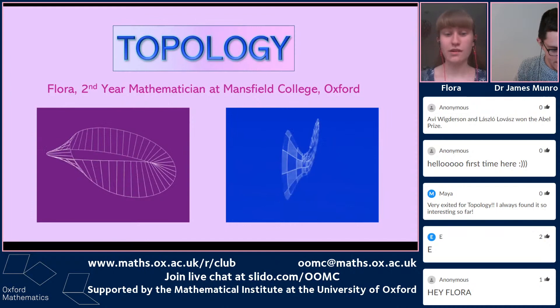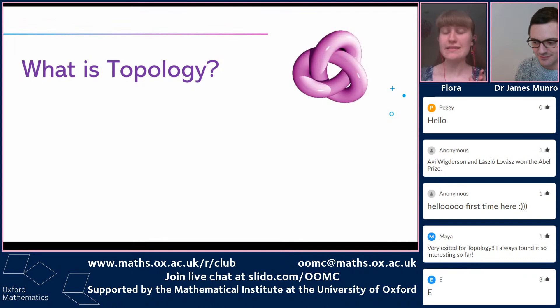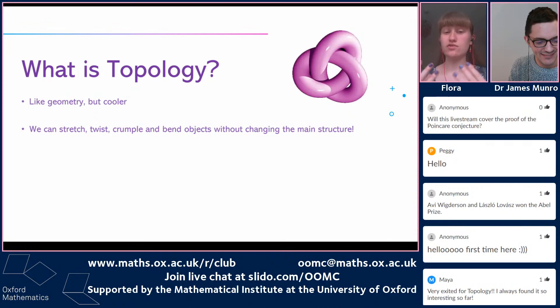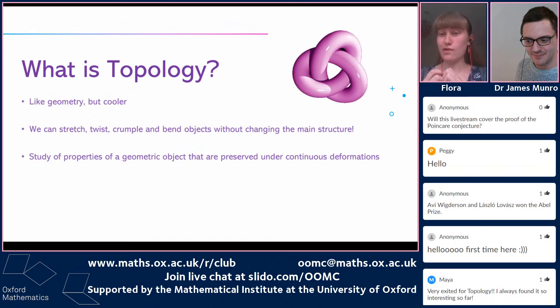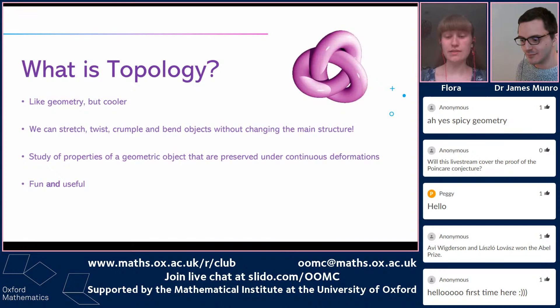So I'm Flora, a second year mathematician at Mansfield College, Oxford, and this is an introduction to topology. Topology is a subject which studies shapes and spaces, but without worrying about things like distance and angles. It's kind of like geometry, but cooler. In topology we can stretch, twist, crumple and bend objects without changing their main structure — you can bend, but you can't break. The formal definition is it's the study of properties of a geometric object that are preserved under continuous deformations. It has applications in biology, computer science, physics, robotics, and games and puzzles like entanglement puzzles.